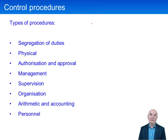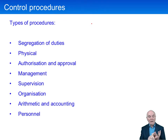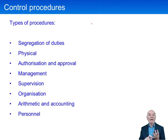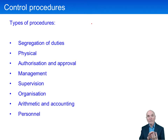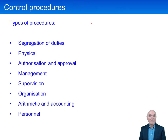What you want for segregation of duties is to break up each transaction so that several people are involved: one person to order the goods, one person to receive and count the goods, one person to receive and check the invoice back against the goods received notes and the orders, and finally a person who is in charge of actually making the payment. That way, if there's going to be fraud, four people have to be involved — collusion, as it's called — which is high risk. But also, because you have one person checking another, the chance of spotting an innocent error is much greater.